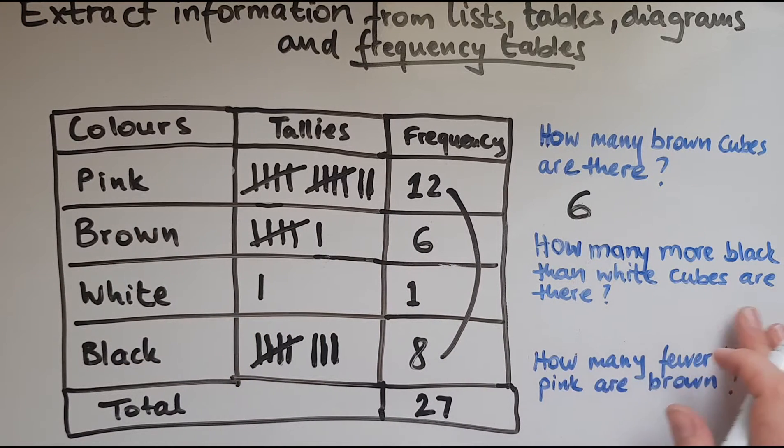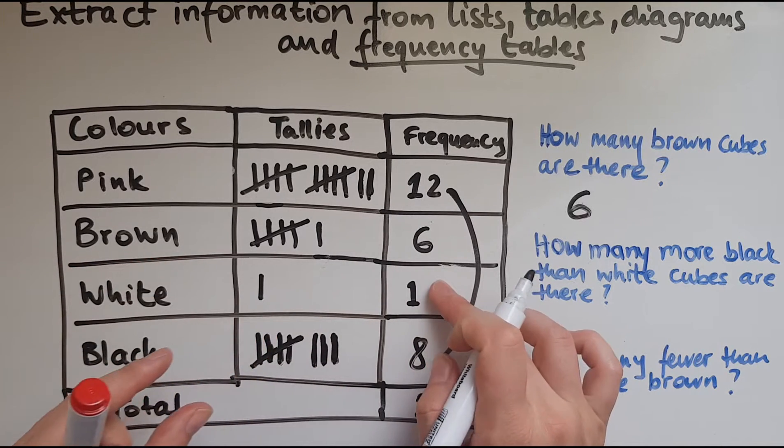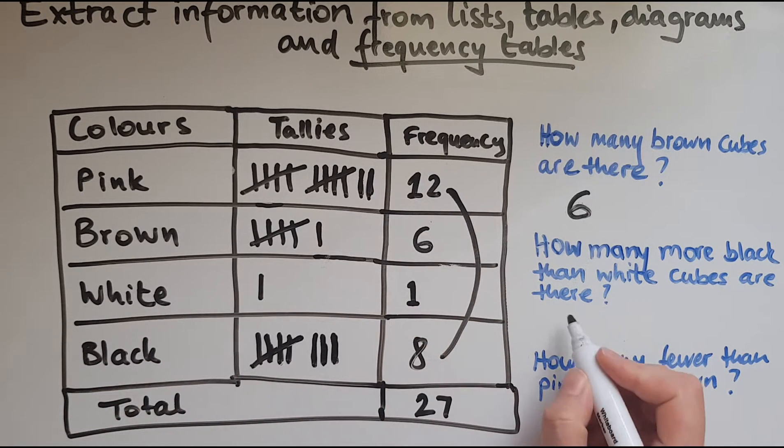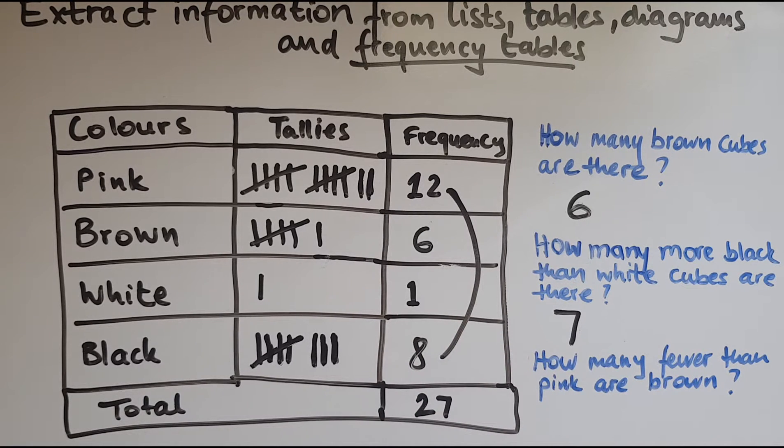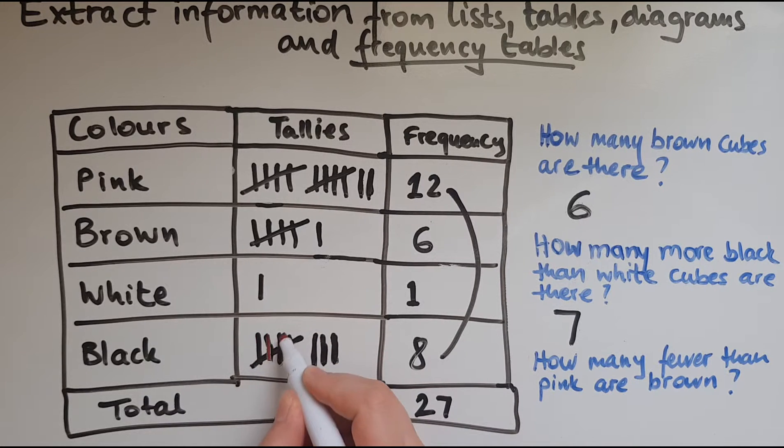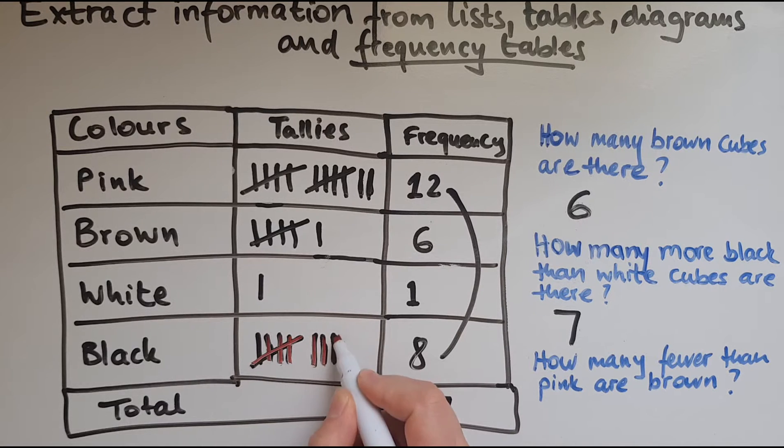How many more black than white cubes are there? So we're comparing black with white. And there we have, there is one white and eight black. How many more are black? And that is seven because eight take away one gives you seven. One and seven gives you eight. Or you could just go comparing them. There we have white and that's black. So that's the same. Now this is extra. That's extra. That's extra. And this is extra as well.